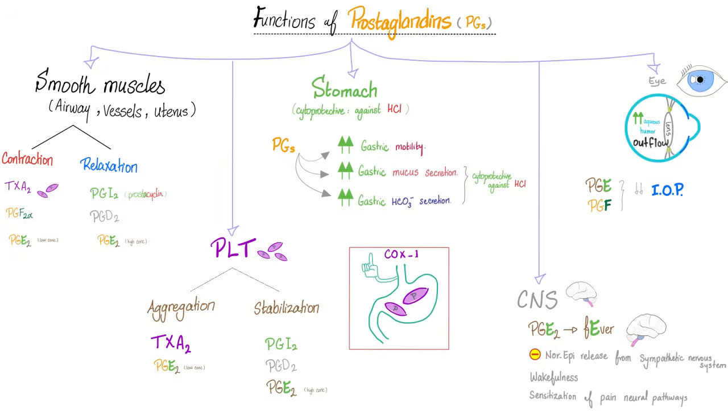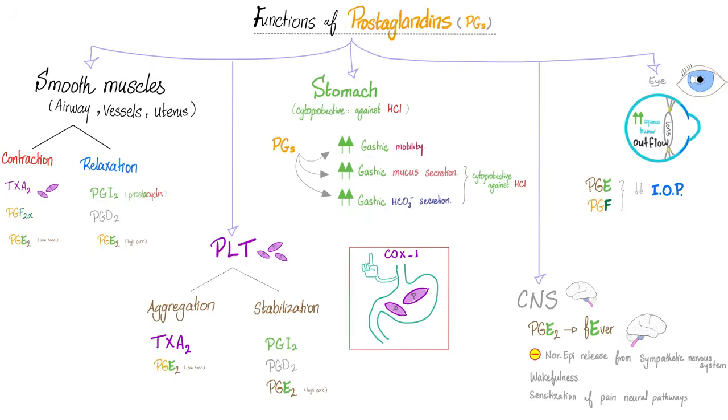In the eye, prostaglandin E and prostaglandin F decrease intraocular pressure by increasing the outflow of the aqueous humor.